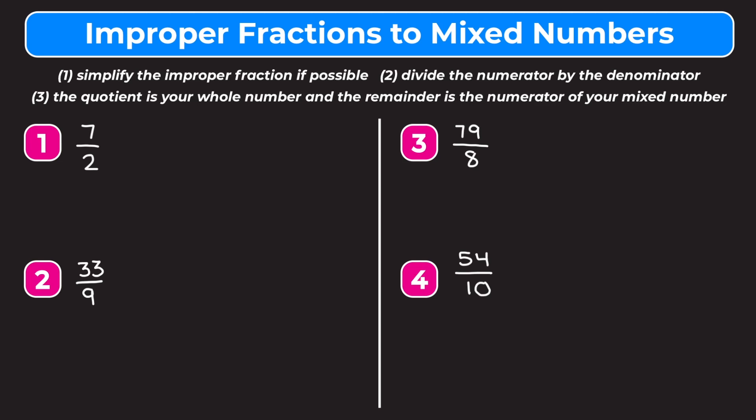At the top of our screen we have some steps we can use when solving these types of problems. First, we want to simplify the improper fraction if possible. Then we divide the numerator by the denominator. The quotient is going to be the whole number part of our mixed number, the remainder will be the numerator, and we always keep the denominator as it is.